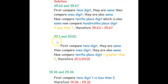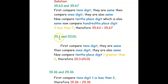The next pair is 20.1 and 20.01. Start from the first digit — the tens digit — they are the same. The ones digit is also the same. Now compare the decimal part. The tenths place: here it is 1, and here it is 0. Since 1 is greater than 0, we write 20.1 is greater than 20.01.